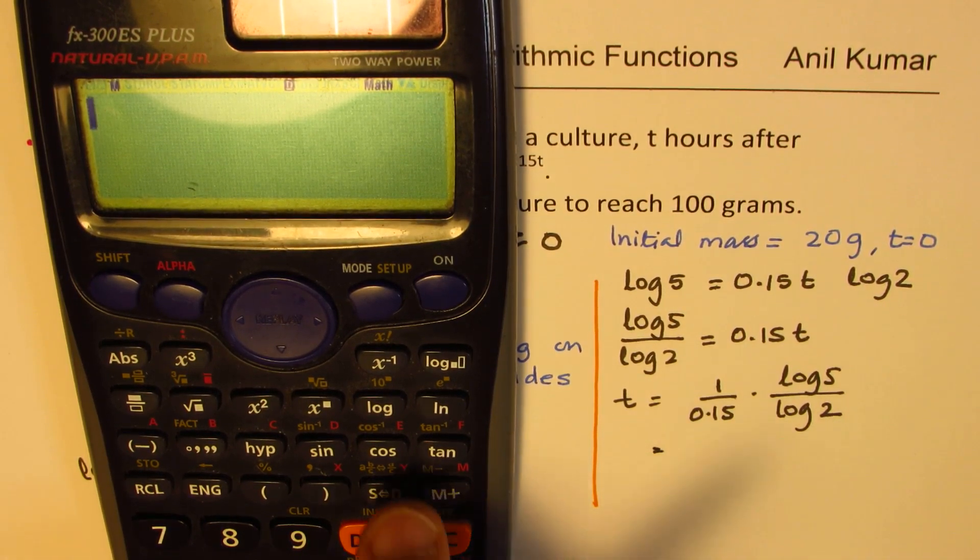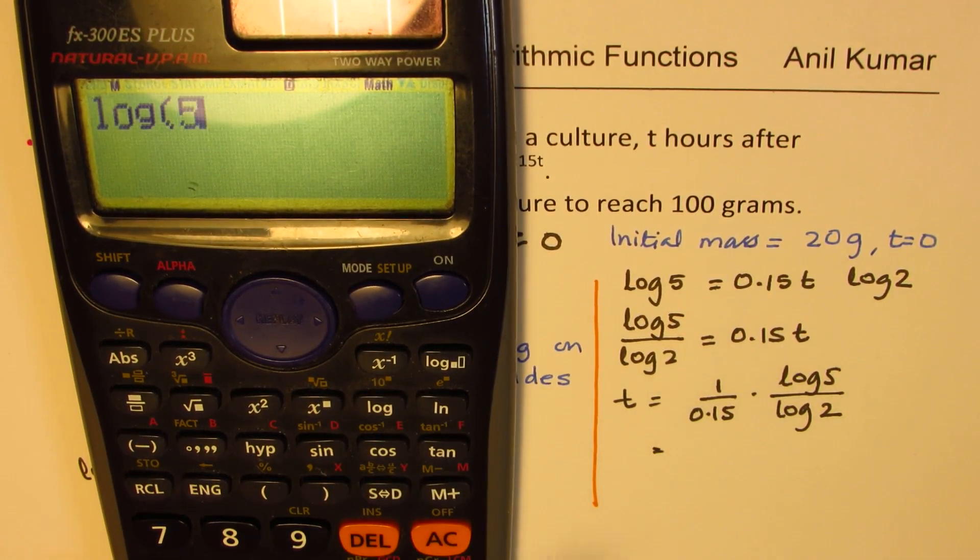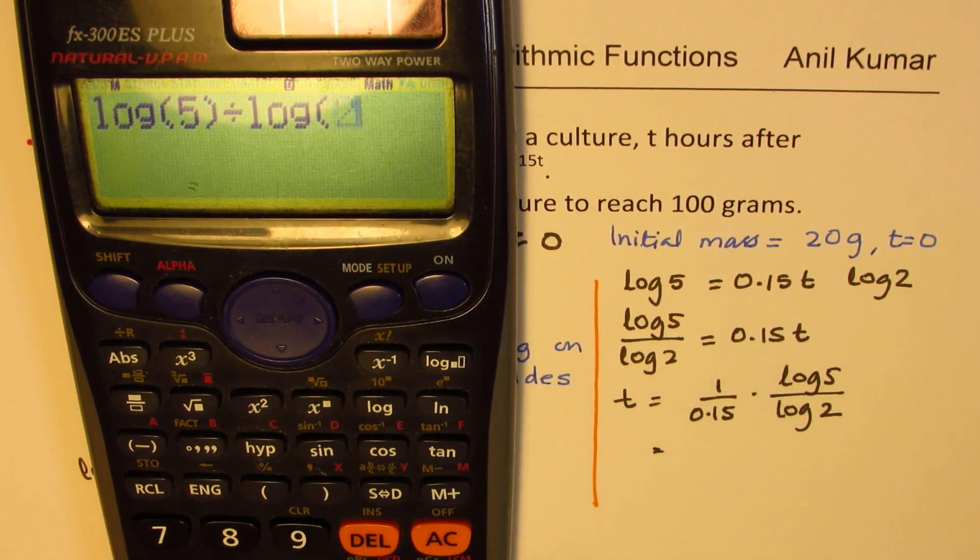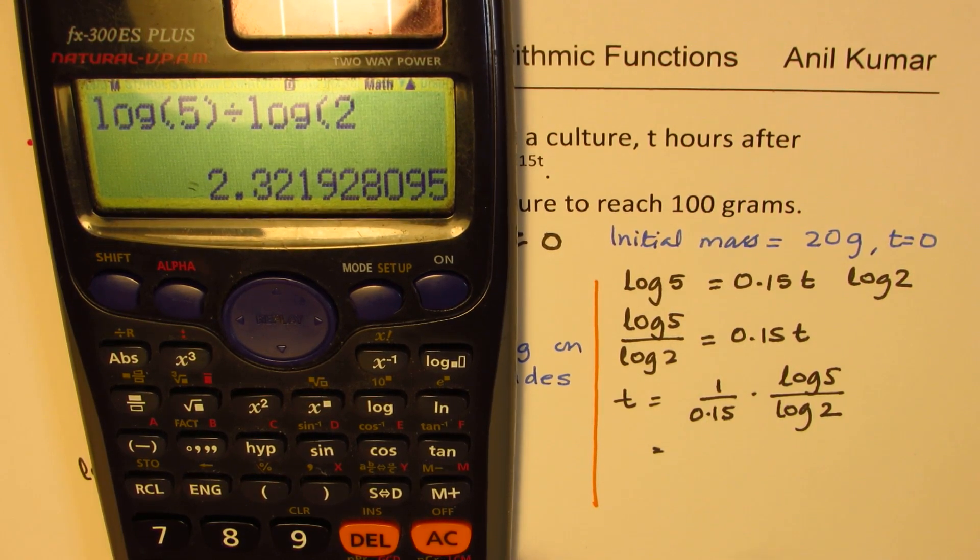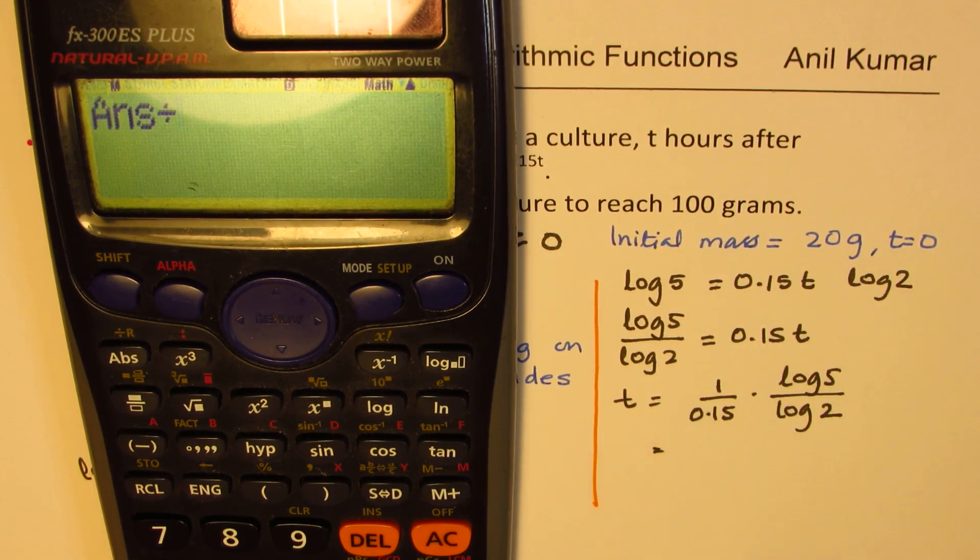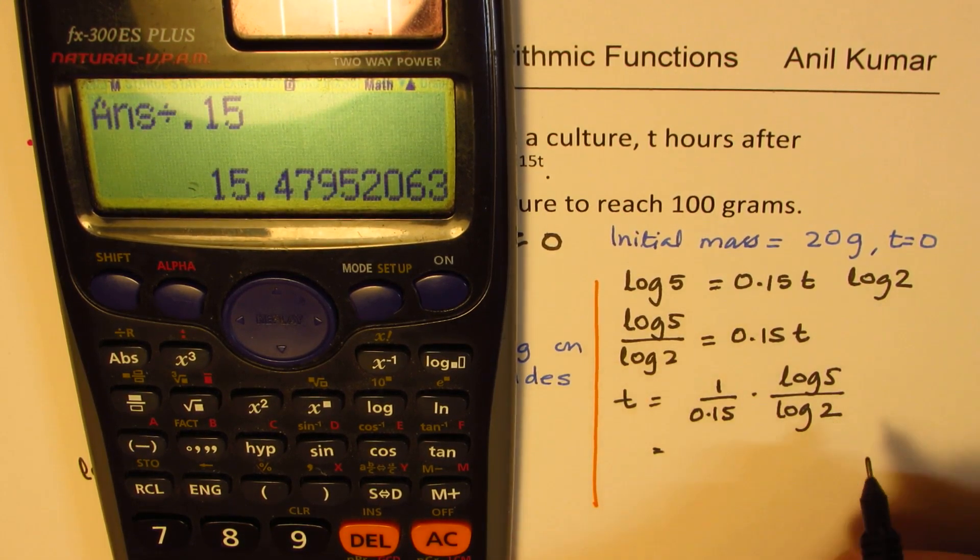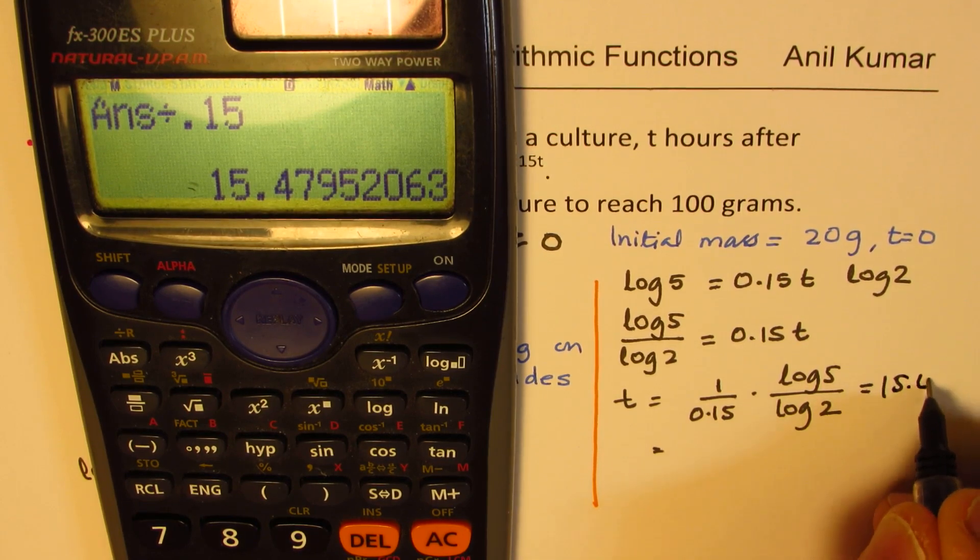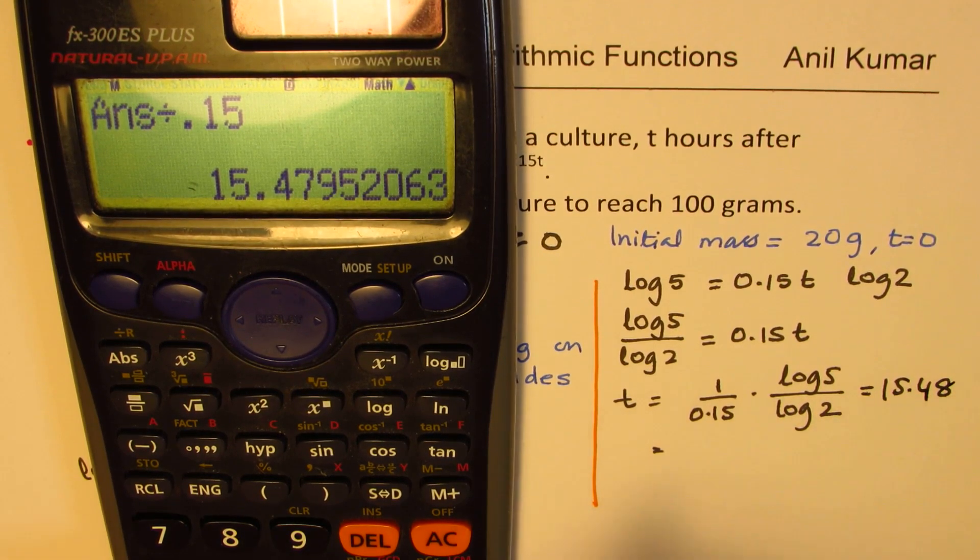Now let's find this ratio. We have log of 5 divided by log of 2. This gives you some value. We'll divide this value by 0.15 to get our answer, which in this case is 15.48.